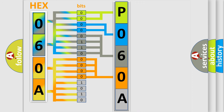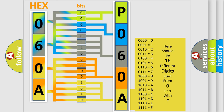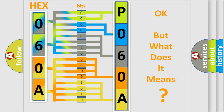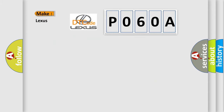A single byte conceals 256 possible combinations. We now know in what way the diagnostic tool translates the received information into a more comprehensible format. The number itself does not make sense to us if we cannot assign information about what it actually expresses. So, what does the diagnostic trouble code P060A interpret specifically for Lexus car manufacturers?